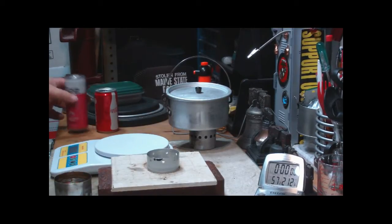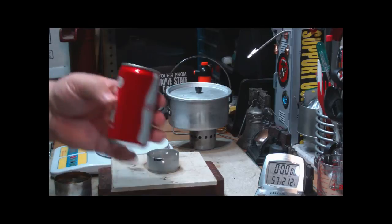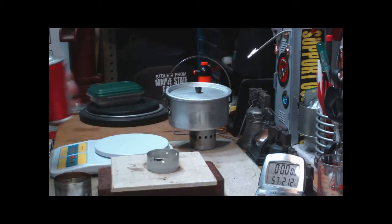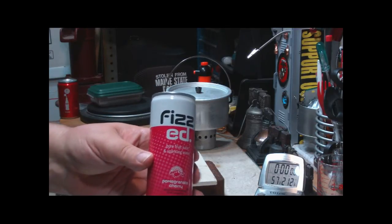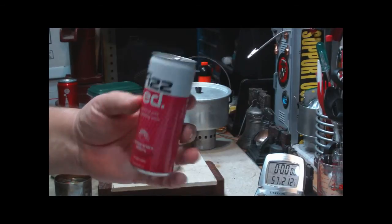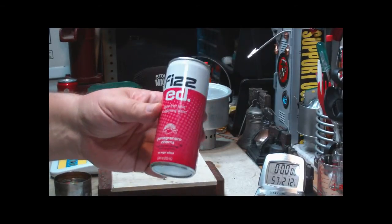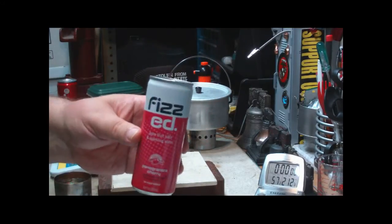So what I did was, I didn't have any more of the small soda cans, so I went to one of our local bargain food stores and found these things. I think it's called Fizz Ed. It's an 8.4 fluid ounce can, but it's a little bit smaller in diameter, but taller.